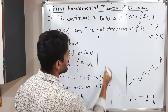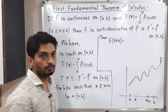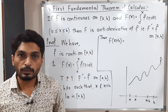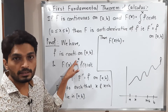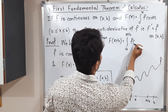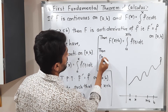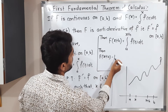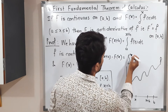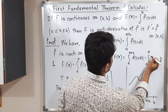Then capital F(x + h) — since F(x) = ∫ₐˣ f(t) dt, we replace x by x + h to get F(x + h) = ∫ₐˣ⁺ʰ f(t) dt. Subtracting, F(x + h) − F(x) equals ∫ₐˣ⁺ʰ f(t) dt minus ∫ₐˣ f(t) dt.